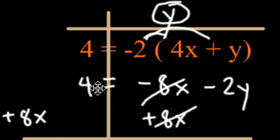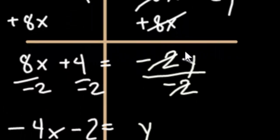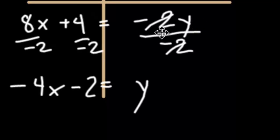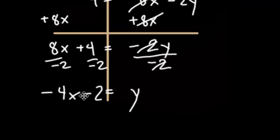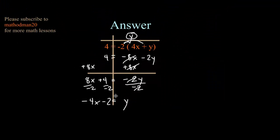Since 8x is not like terms with the 4, I just put it aside and drop both down. 8x plus 4 equals negative 2y — that also dropped down. The final step is to divide both sides by negative 2, as you see right here. Remember to divide both terms on the left side by negative 2. After you calculate it, you get your answer. Hopefully this was helpful and you will be solving for y pretty soon once you start graphing linear equations.